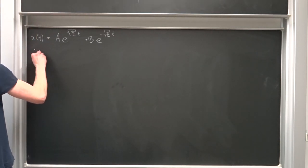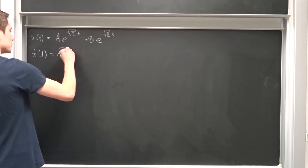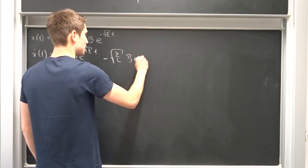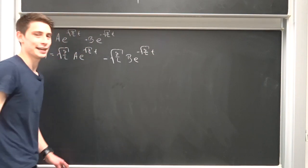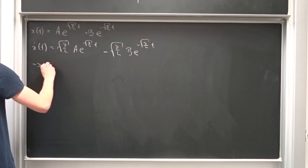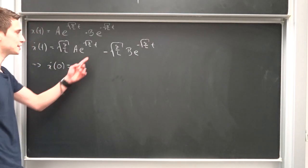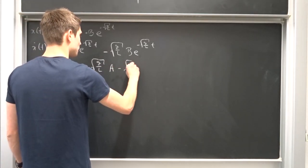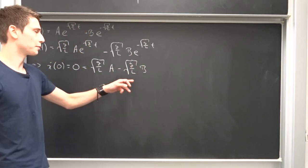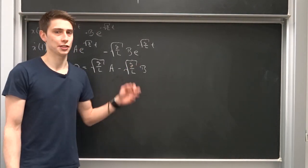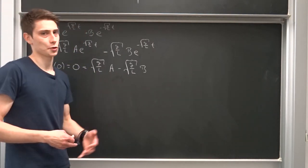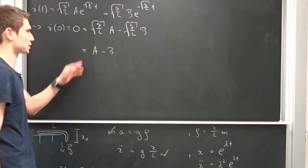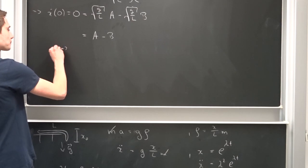Differentiating x(t): x'(t) = √(g/L) · A · e^(√(g/L)·t) − √(g/L) · B · e^(−√(g/L)·t). Plugging in t = 0, the exponentials become 1: x'(0) = √(g/L) · A − √(g/L) · B = 0. Dividing both sides by √(g/L) — which is positive — gives A − B = 0, so A = B.